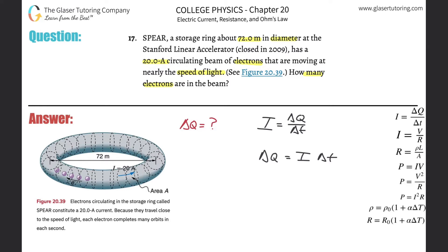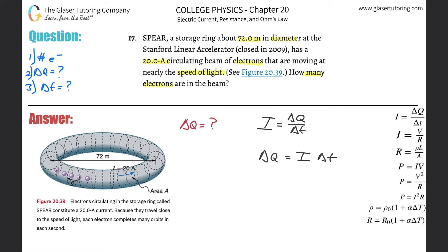I know the current — it's 20. But I don't know the change in time. That basically becomes the new question. Notice how my questions have changed: first I asked how many electrons are there, then I said maybe I can figure that out by knowing the change in charge. I looked for formulas, found one that had change in charge in it along with the current. Now I need to know the change in time — that's the new question.